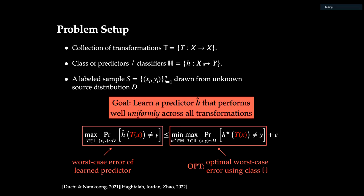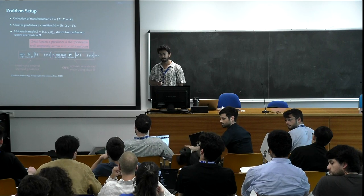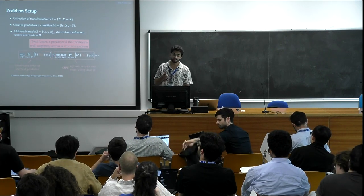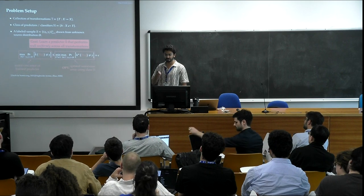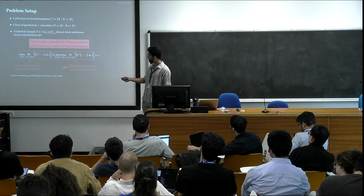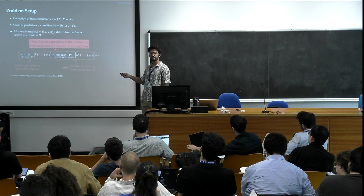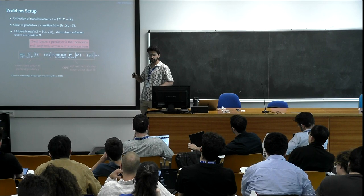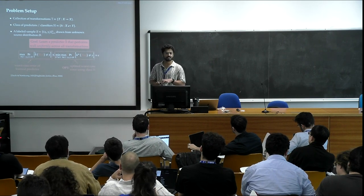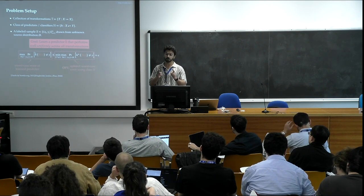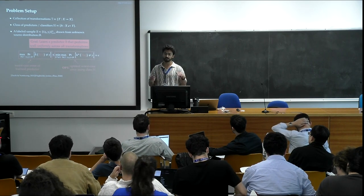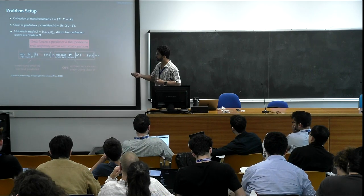Question: you want to be equally good on all transformations, but minimizing worst-case error — does that guarantee equal performance on all transformations? Answer: it is not a priori clear whether it is possible to compete separately with the best achievable on each transformation individually, and whether that goal is achievable with a single predictor. The challenge is we want a single predictor that works as well as possible for all transformations. We will consider a relaxation of this objective towards the end of the talk.